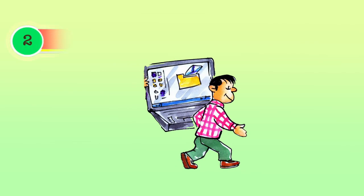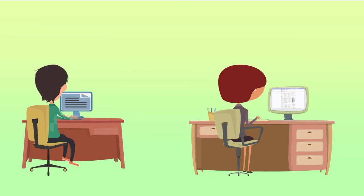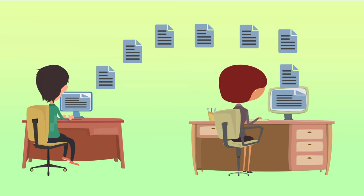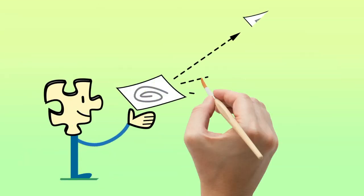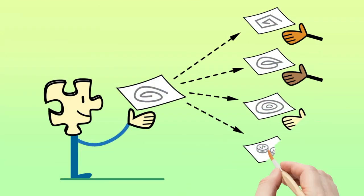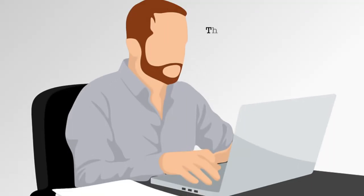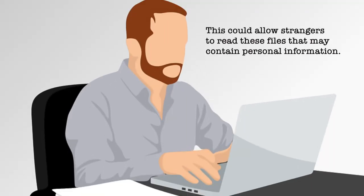The second issue is file sharing. Computers used by students or faculty may contain software that allows files to be accessible to other users on the campus network or outside, without the knowledge of the owner. They may also allow files to be stored on a central server accessible to others without their permission, potentially allowing strangers to read files that may contain personal information.